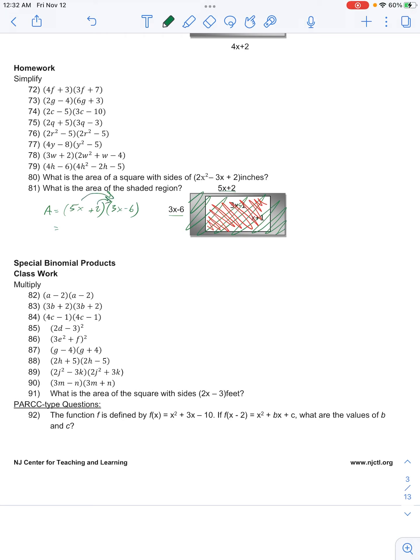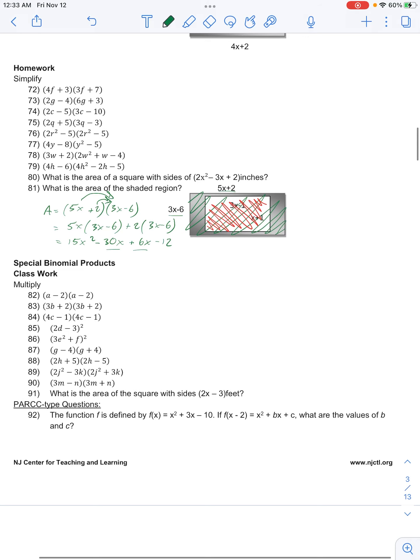So we have 5x times 3x minus 6 plus 2 times 3x minus 6. Then simplifying, we have 15x squared minus 30x plus 6x minus 12.